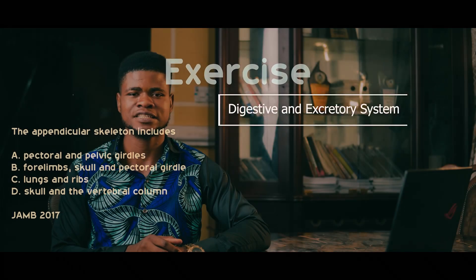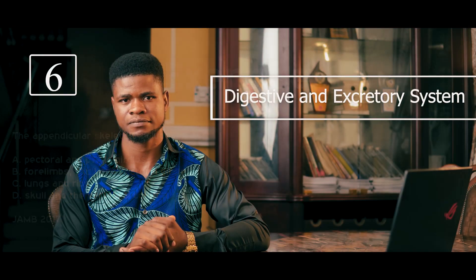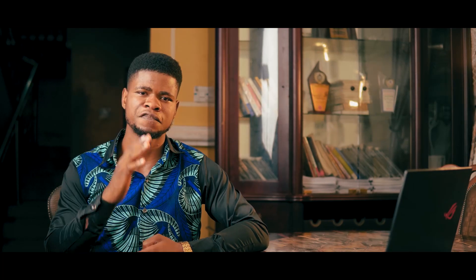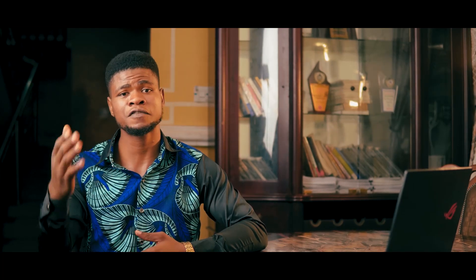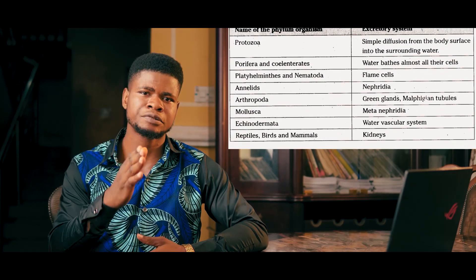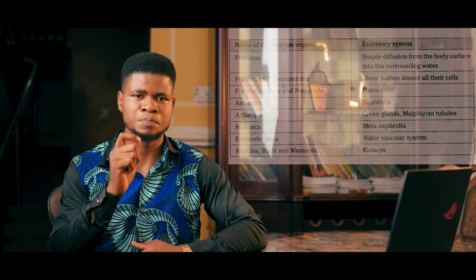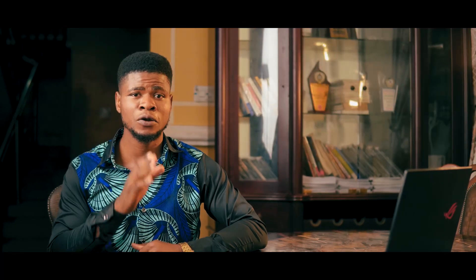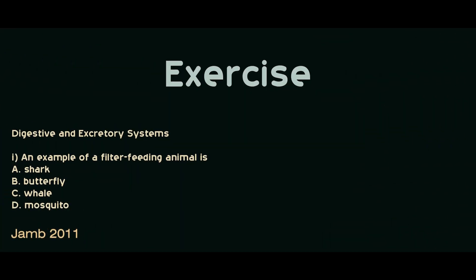The next is the digestive system and excretory system — two topics in one. You should know the types of feeders: the filter feeders, the fluid feeders, etc. Know the structures of the digestive system and the enzymes that play important roles, as well as the parts of the body involved. Also know the structures of the excretory system and the excretory structures of organisms. Lots of questions come from here. Attempt the question on your screen and leave the answer in the comments section.